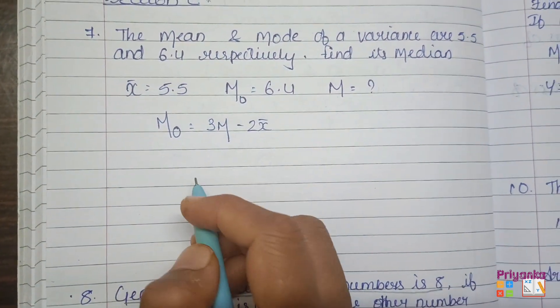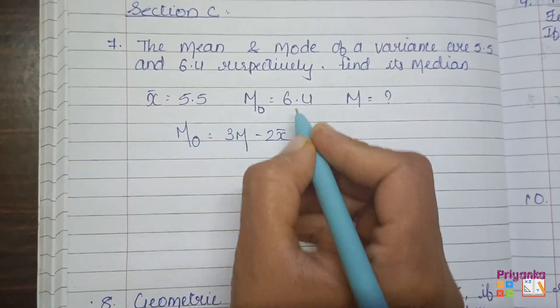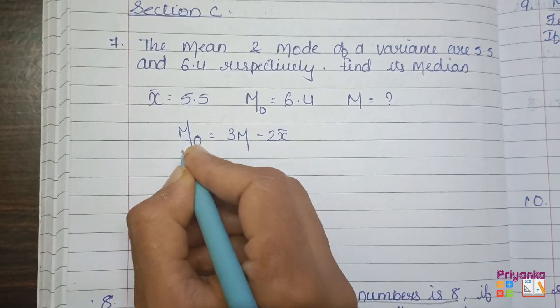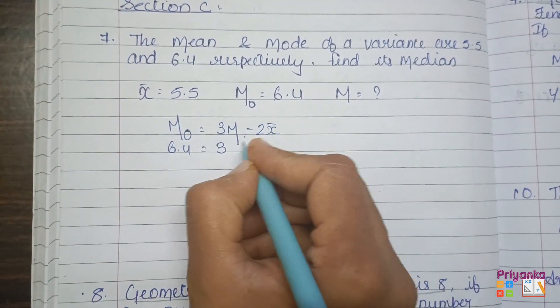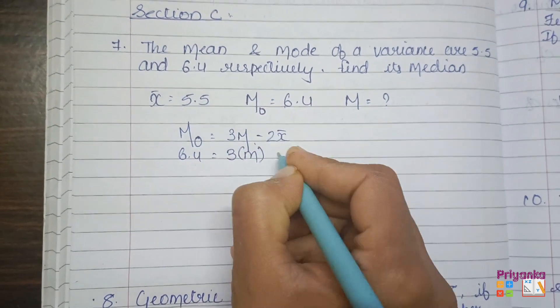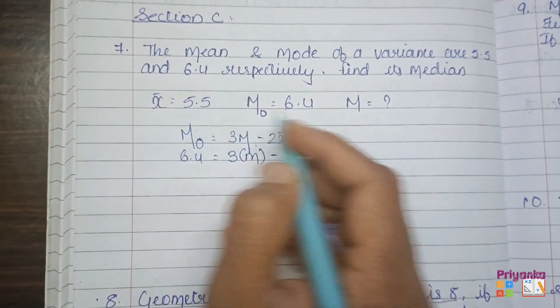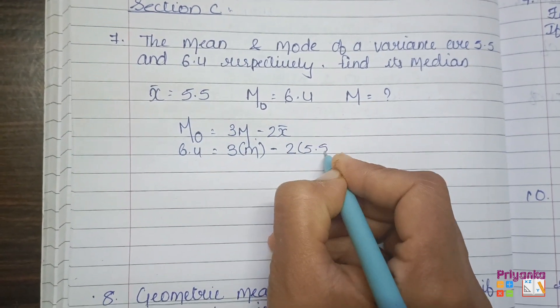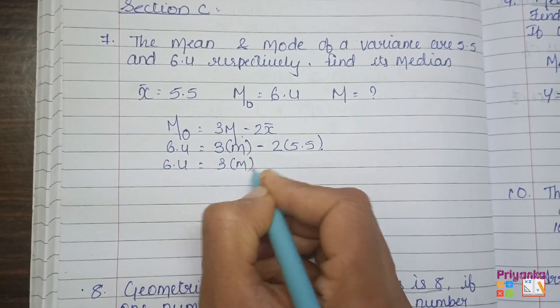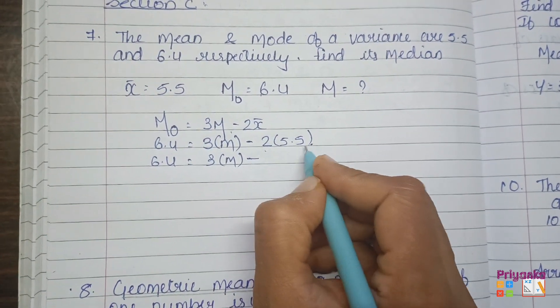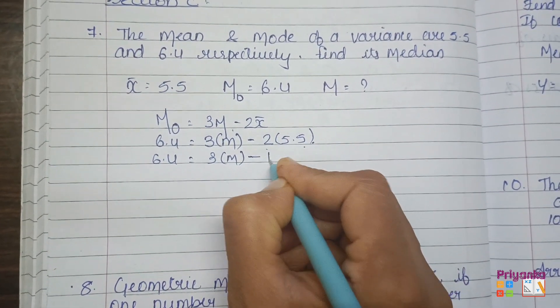Now, let's keep all the values in the formula. Mode, which is given in the question, is 6.4. 3 median, which we don't know, so keep it as it is. 2 mean is 5.5. Get them multiplied. Keep median as it is. 2 into 5.5 is 11.